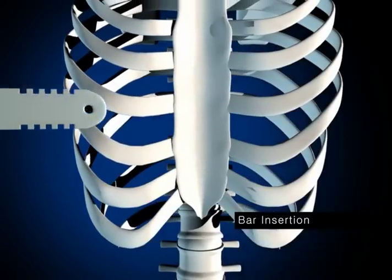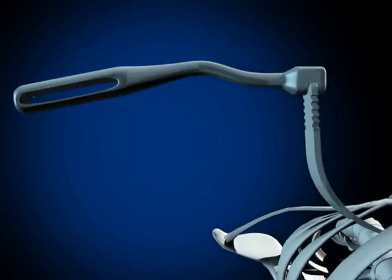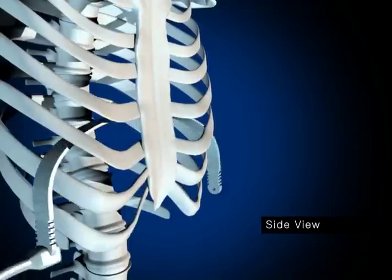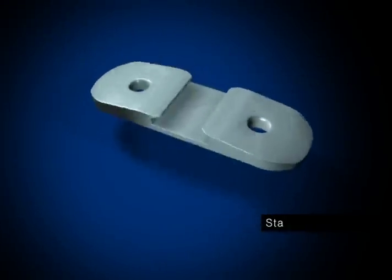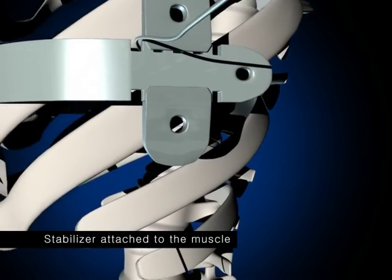After doing that, we make small incisions on either side of the chest and tunnel across the front of the chest, passing a stainless steel bar which has been curved from a flat piece of metal to conform to that particular patient's chest shape on the operating table.